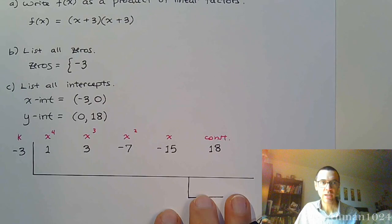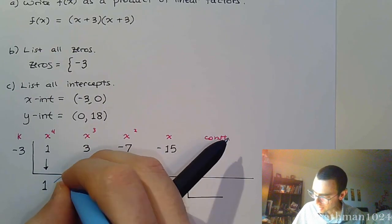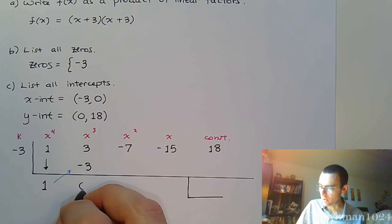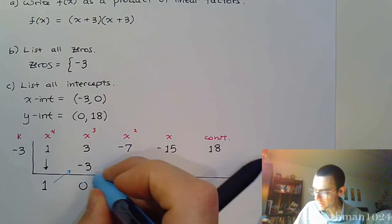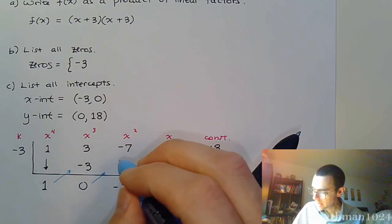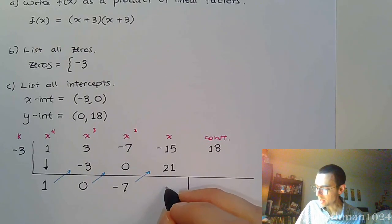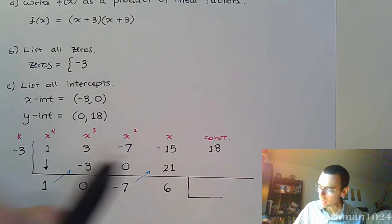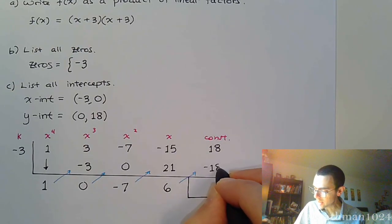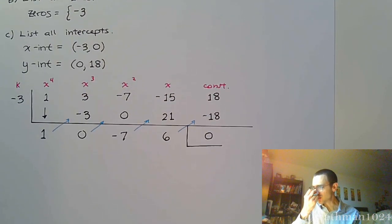Another example of synthetic division, and I know that you guys have this. So bring down the one. Multiply to get negative three, combine to get zero. Negative three times zero is zero. These guys combine to get negative seven times negative three, positive twenty-one. Combine, this gives me six. Multiply, I get negative eighteen, and I get a remainder of zero, which is what I'm supposed to have.